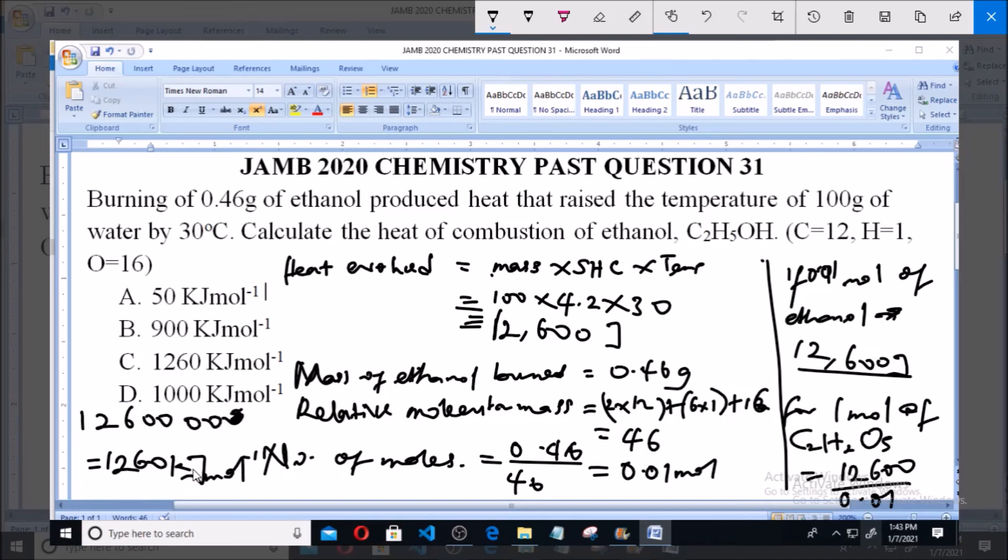Converting to kilojoules, we remove three zeros, giving us 1260 kilojoules per mole.